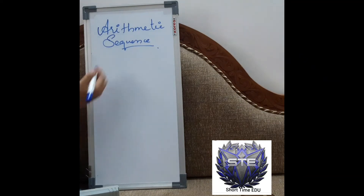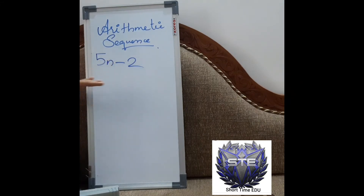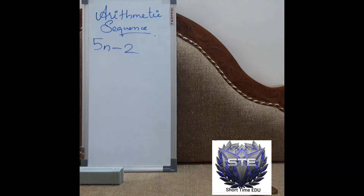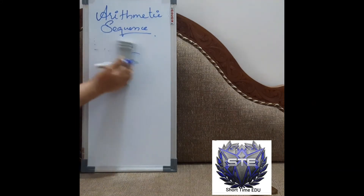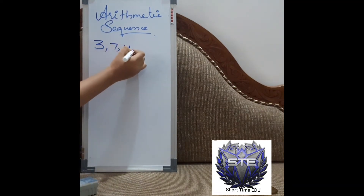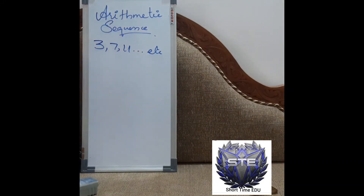Now I will give you another question. Consider the expression 5n minus 2. x1 is found by substituting n=1: 5 minus 2 equals 3. So x1 is 3 and d is 5. The sequence would be 3, 7, 11, and so on. From this sequence we can find the nth term. We can also find how many terms there are in any given range.